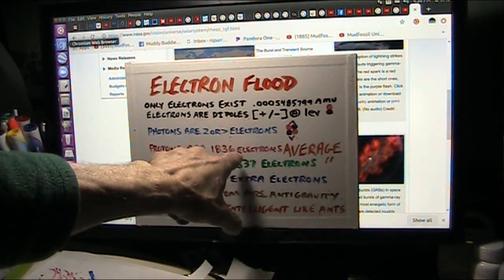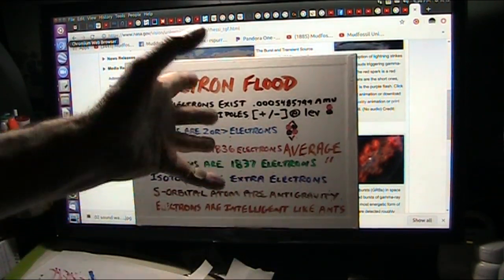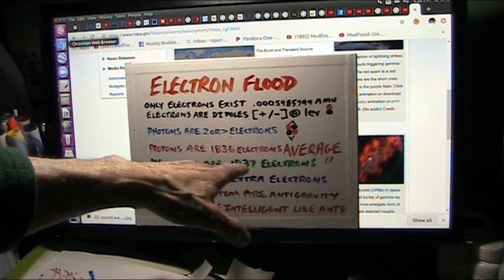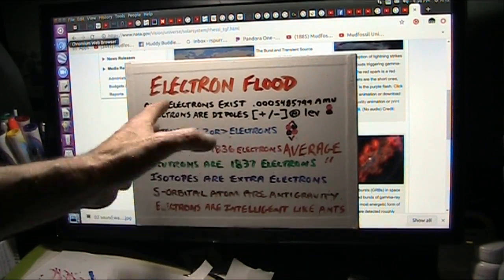Now, protons are 1836 electrons, average, you know, they can go a couple here and there difference, but those are called isotopes.